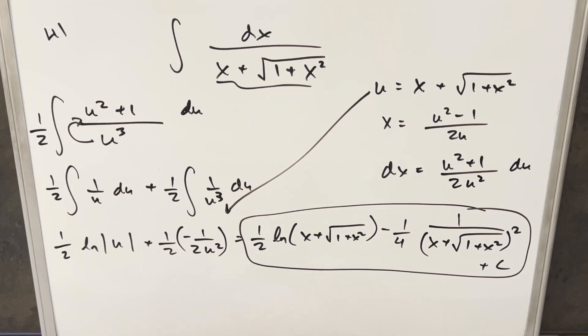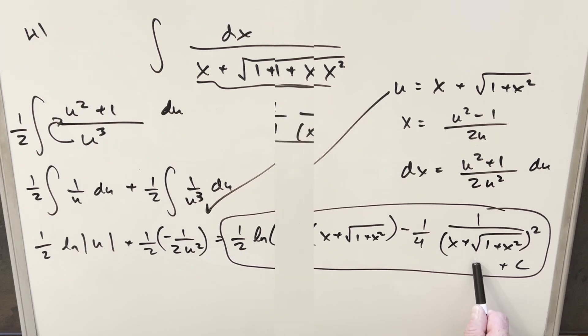But now, one thing before we finish up, this solution actually looks pretty different than what they had in the MIT answer key for this one. So what I want to do is actually take this, manipulate it, try to rearrange this denominator over here in order to make it look more like their solution.